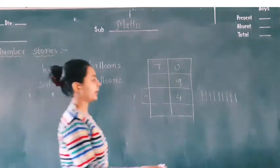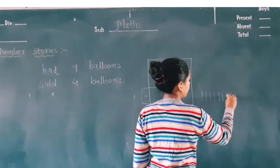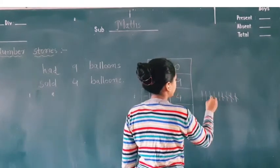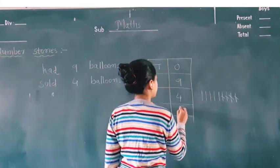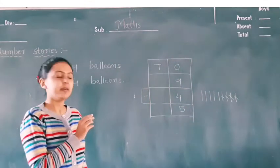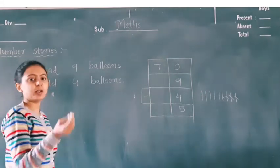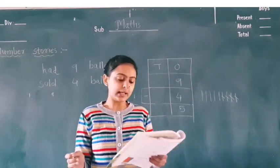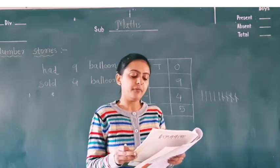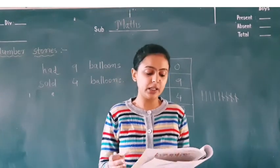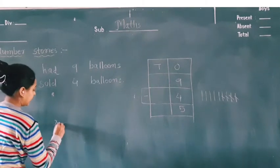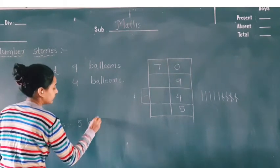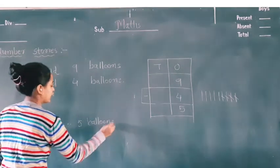So 4 ko cut karna padega. 1, 2, 3, and 4. So the remaining will be 1, 2, 3, 4, and 5. So the answer will be 5. How many balloons are left with the balloon seller? The balloon seller had 5 balloons left with him.